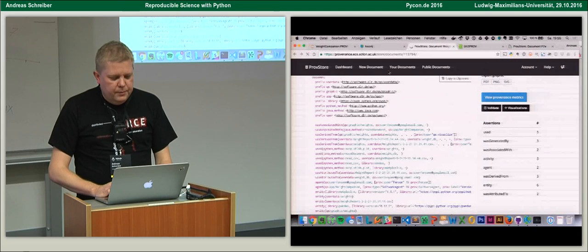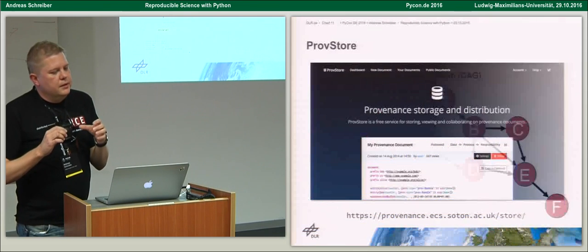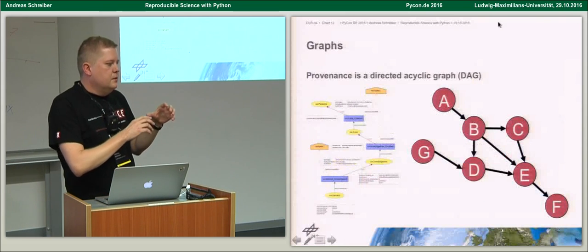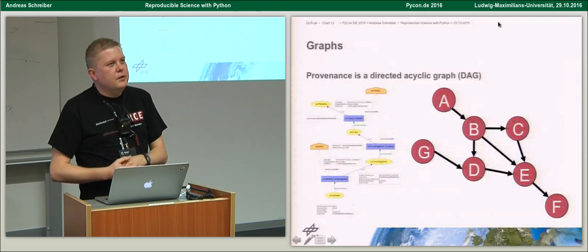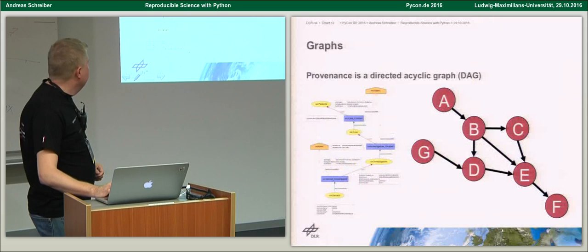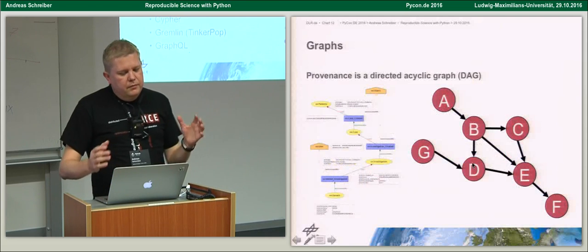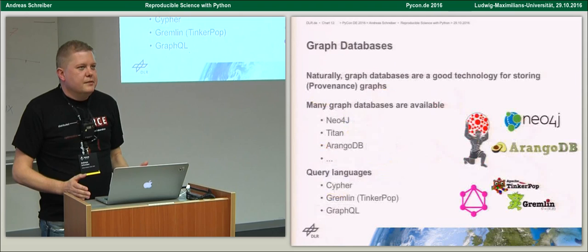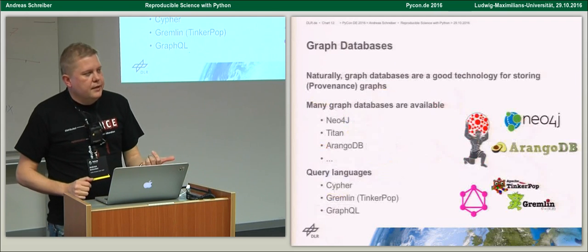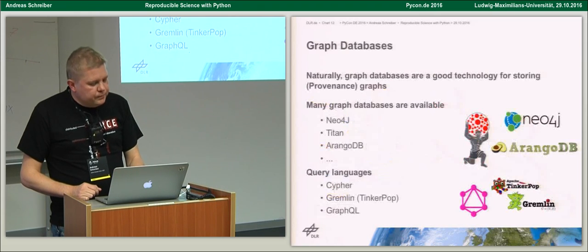Provenance is a directed acyclic graph — there are no cycles. It moves forward in time and you cannot generate the input file from the output file. So provenance information maps naturally to a DAG. Naturally, you'd store graphs in a graph database — though many people store it in other databases. We use graph databases like Neo4j or TitanDB, and query with graph query languages like Cypher or Gremlin or GraphQL.